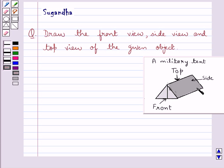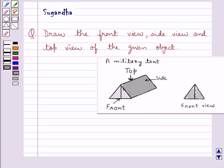If you look at this military tent, you can easily see that this is the front view of the military tent, that is a triangle. We have drawn a triangle with a line which is the front view of this military tent.